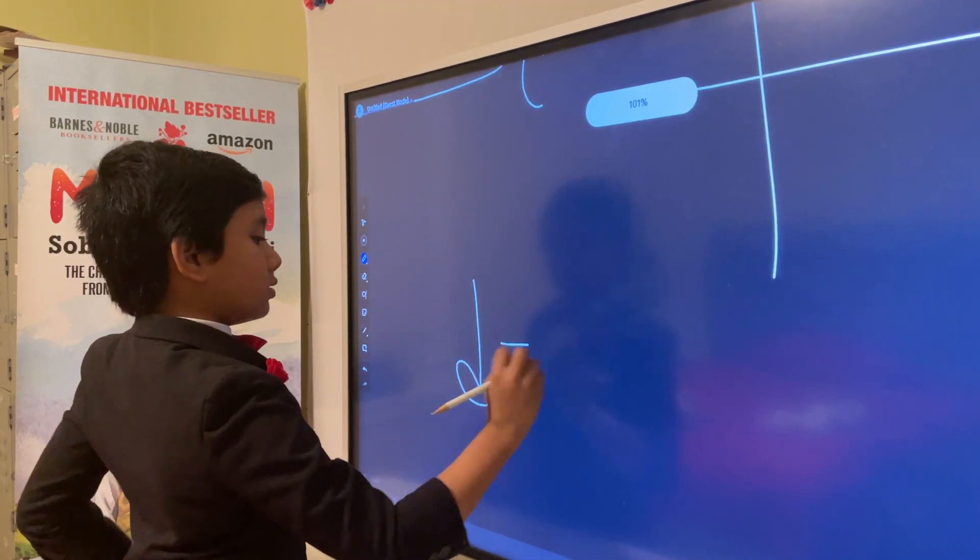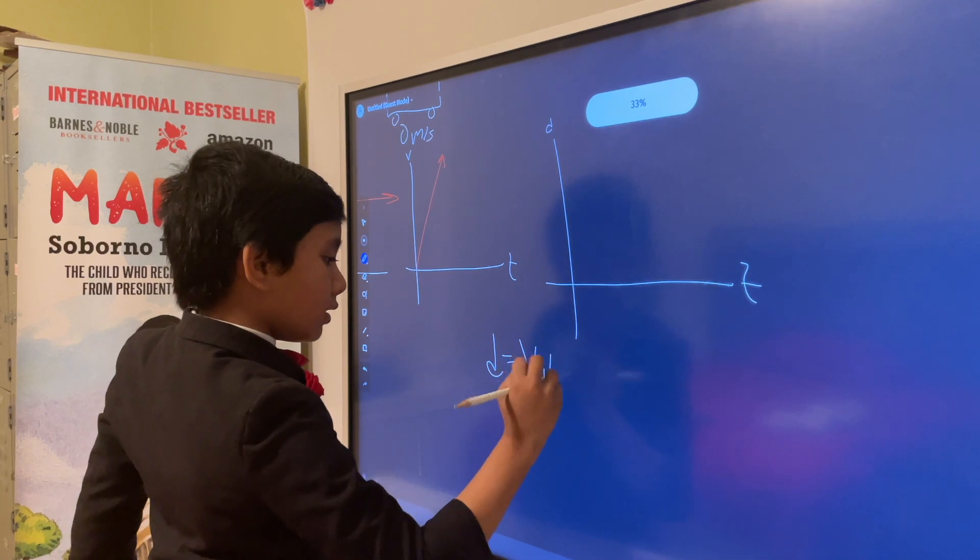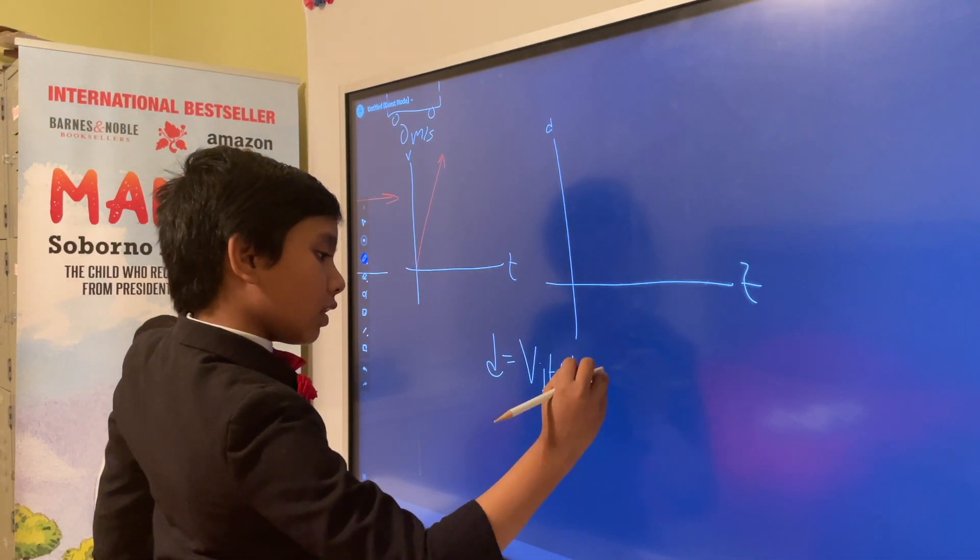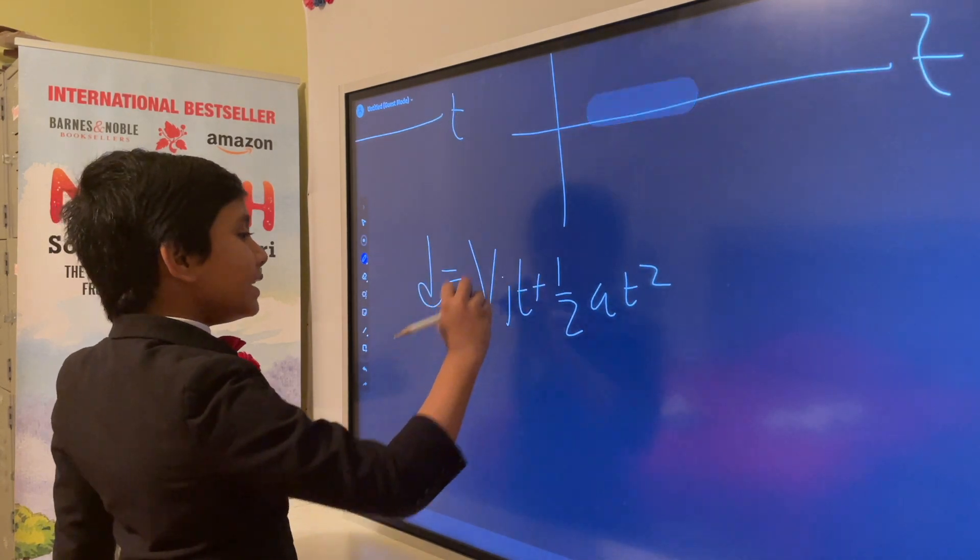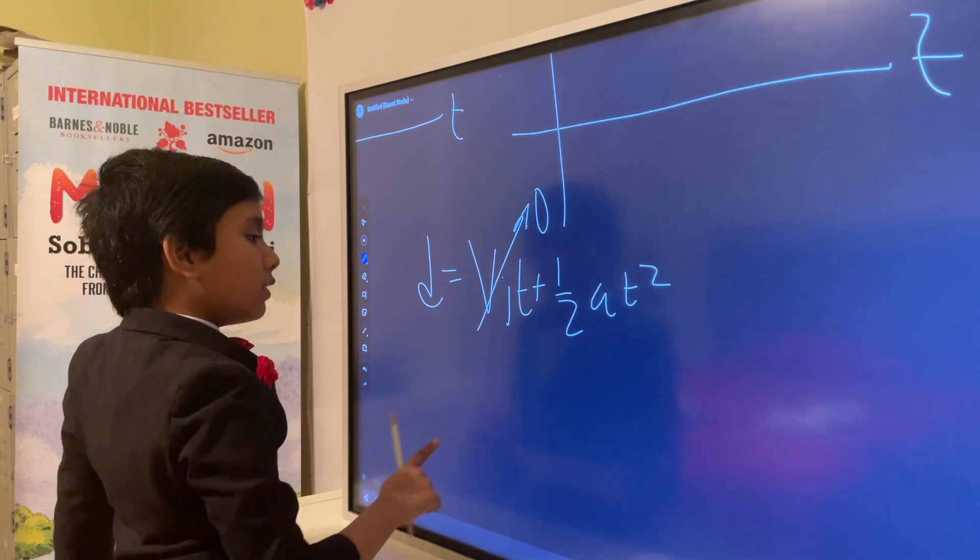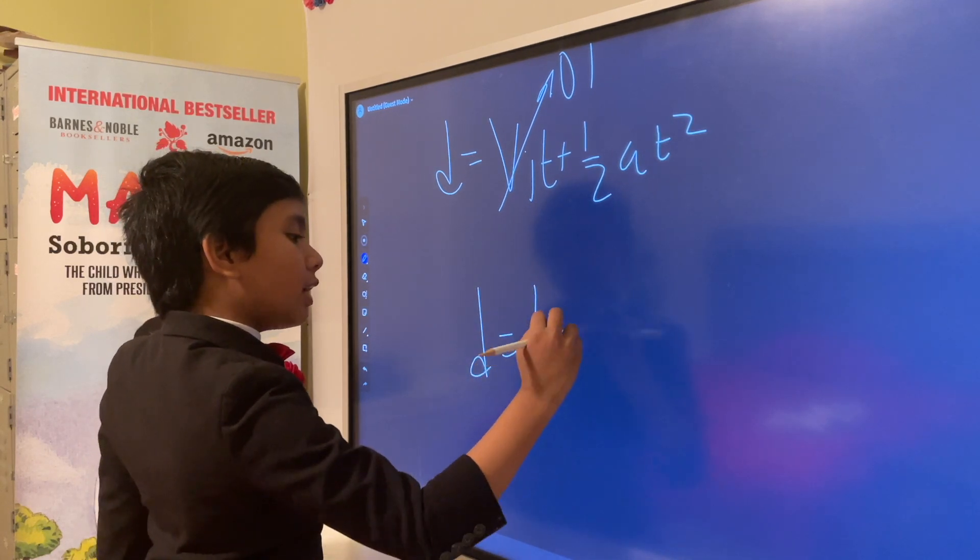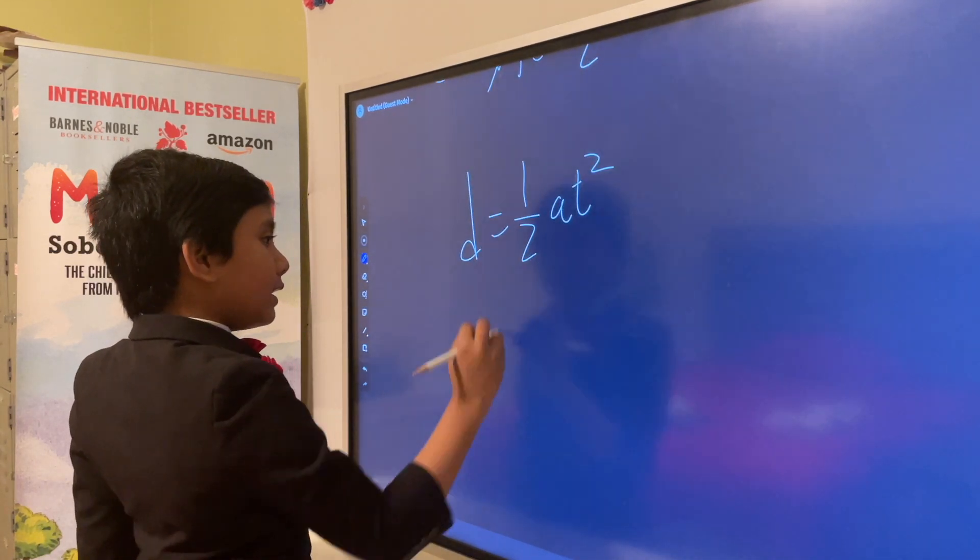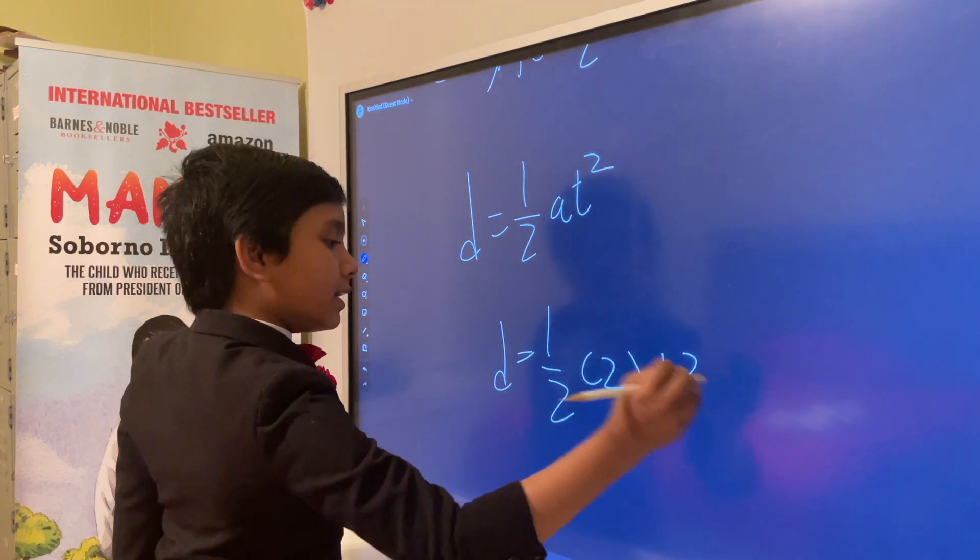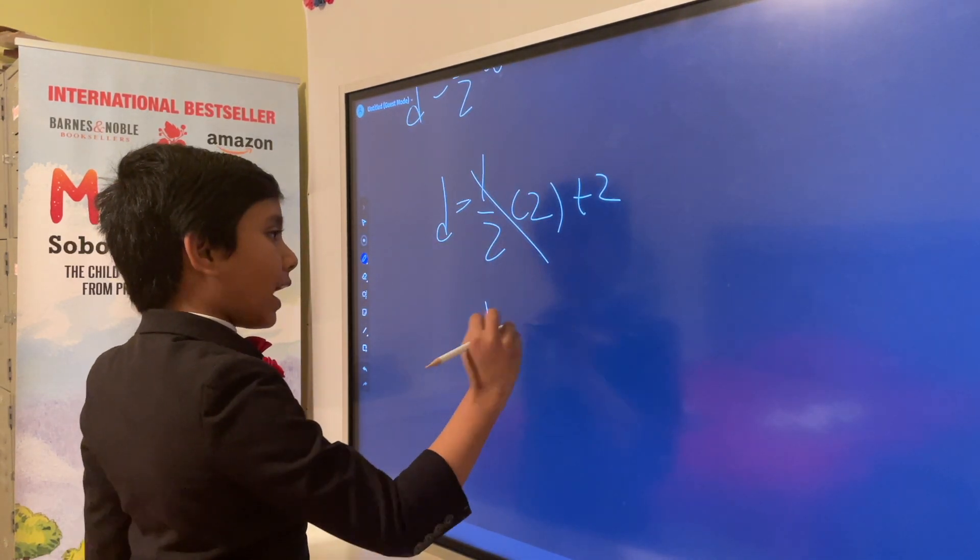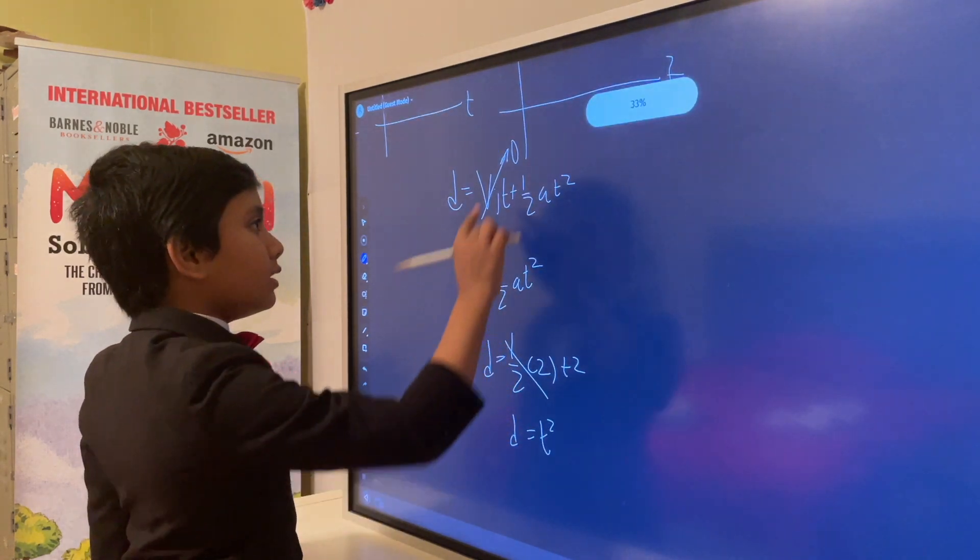This looks hard, but it gets easier when you realize that VI is 0, so it just gives you half AT squared. And it's even easier when you realize that since acceleration is 2, it cancels out with a half, giving you D equals T squared.